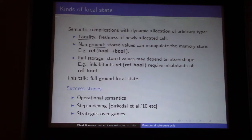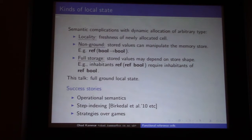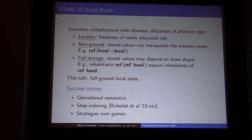When you start classifying reference cells or local state, there are different axes you can classify. The first one is locality — you want to be able to allocate fresh names, fresh locations on the fly. The second one is being either ground or non-ground: whether your store, your memory, can store values that can mutate the store itself — things like functions. This is an example of a reference cell that can manipulate the store again. That's the distinction between non-ground versus ground.